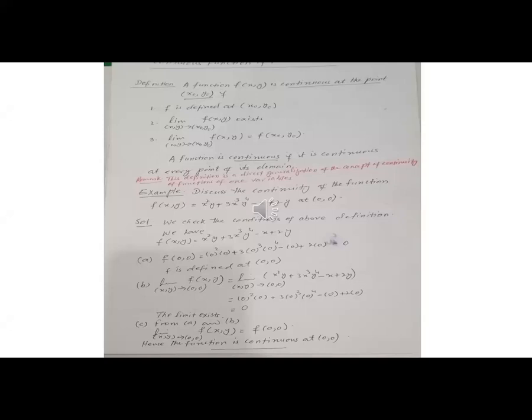We say that a function f(x,y) is continuous at a given point (x₀, y₀) if: first, f is defined at (x₀, y₀); second, the limit exists; and third, the value and the limit are equal. If these three conditions are satisfied, the function is continuous. If even a single condition is not satisfied, the function is discontinuous. A function is continuous if it is continuous at every point of the domain of definition.